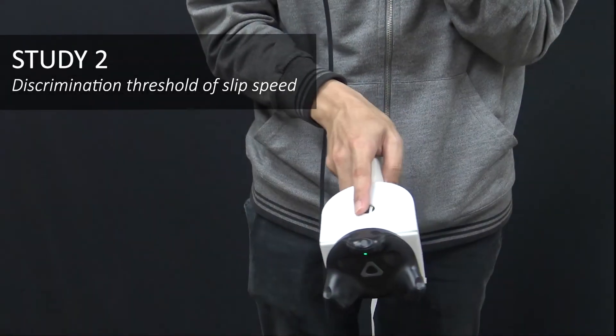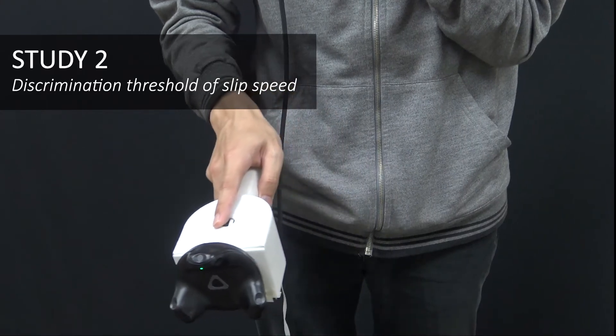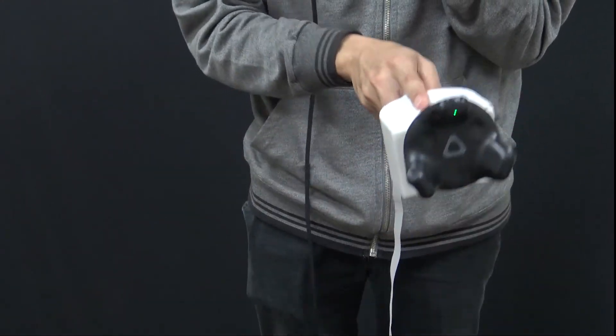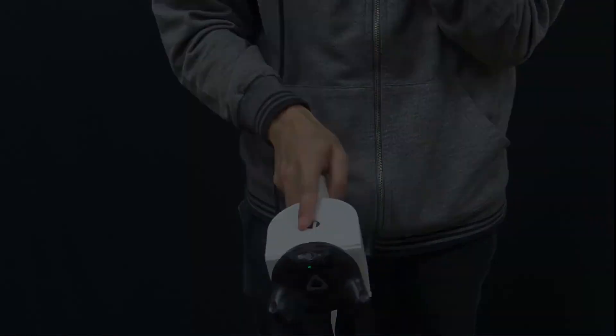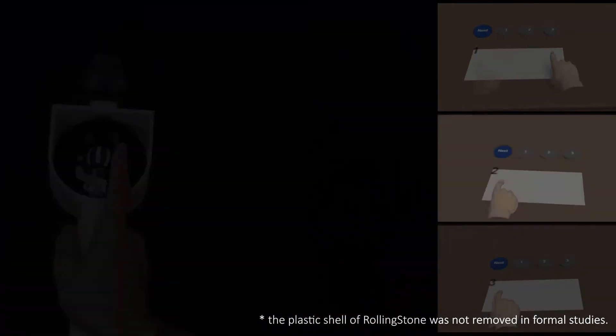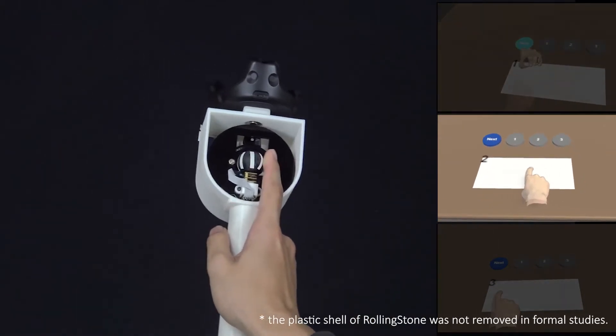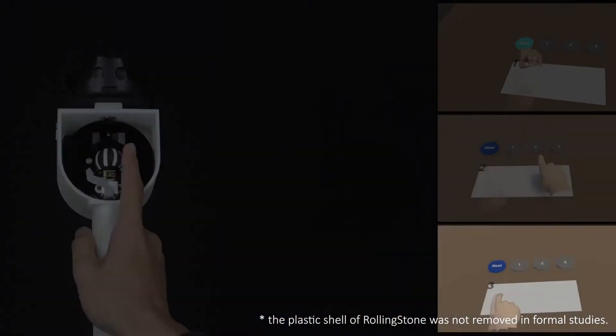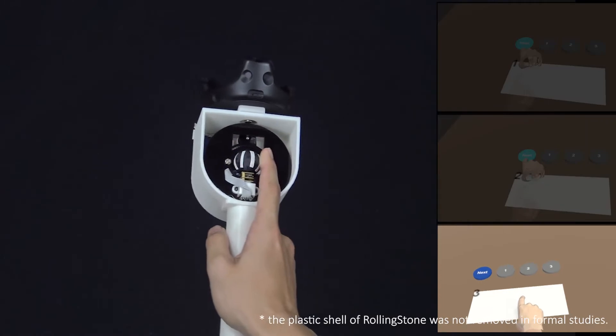In study two, we explored the discrimination threshold of slip speed. Participants were instructed to discriminate the relative slip speed in a controlled experiment. The results showed that with increasing relative speed, the system needs to increase the magnitude of slip speed to change the sensations of texture.